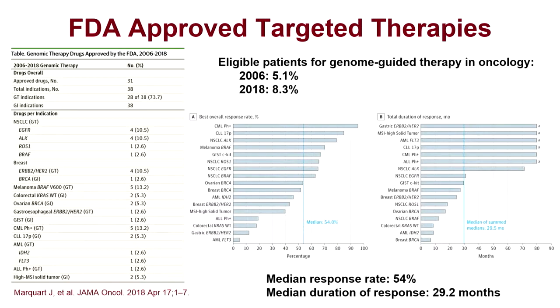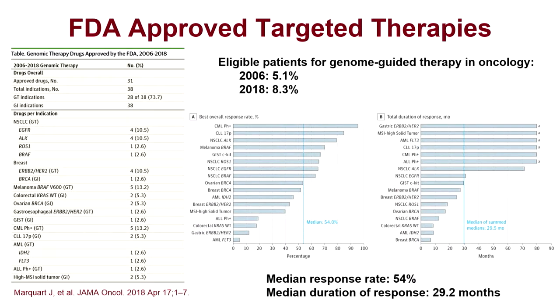The pharmaceutical industry has done a phenomenal job. This is an account of all FDA-approved targeted therapies through 2018. Since 2006, we've had 31 targeted FDA-approved agents for 38 different indications — a tremendous advance in precision oncology. However, looking at the number of eligible patients who could go on these therapies based on genomic indications, in 2006 this was only 5% of cancer patients. This number has increased by over 50%, so now in 2018, 8% of patients would be eligible for an FDA-approved drug based on a genomic alteration, leaving over 90% of patients without a specifically targetable drug.